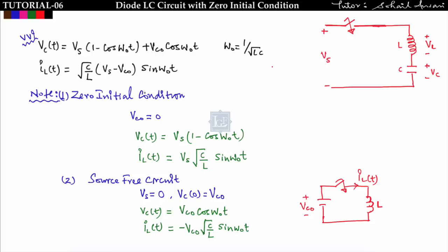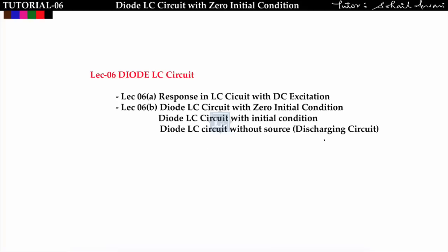We considered two cases: zero initial condition and source-free circuit. For zero initial condition, Vc₀ = 0. For source-free circuit, Vs = 0 with initial voltage Vc₀. In this lecture, we will insert a diode with the LC circuit and examine three cases: zero initial condition, with initial condition, and discharging diode-LC circuit.